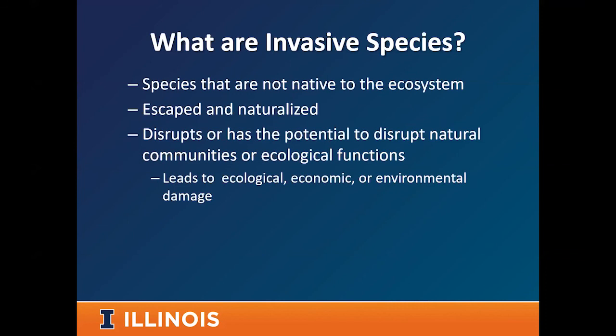So what is an invasive species? These are species that are not native to an ecosystem — they were not naturally found there and did not naturally migrate on their own. They are called exotic species from somewhere else. Those introduced species then had the ability to escape, reproduce on their own, and eventually form self-sustaining naturalized populations.